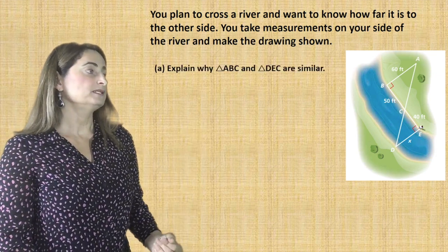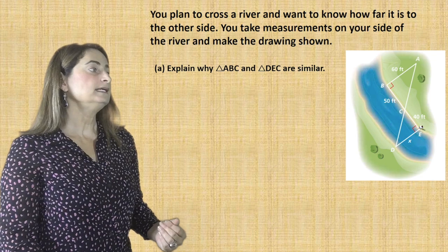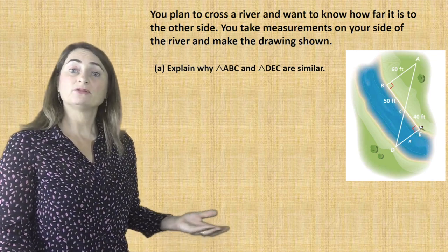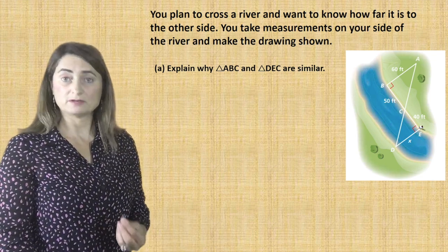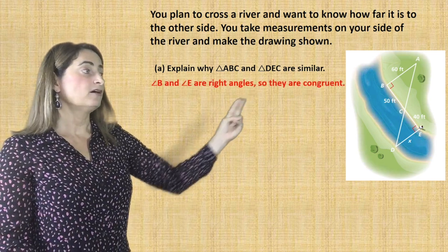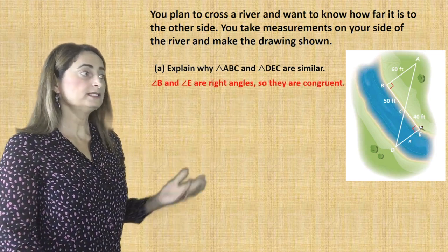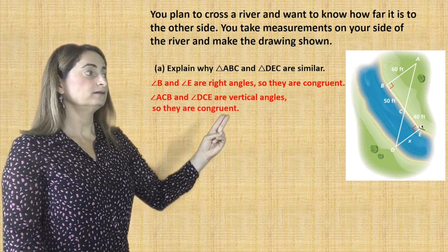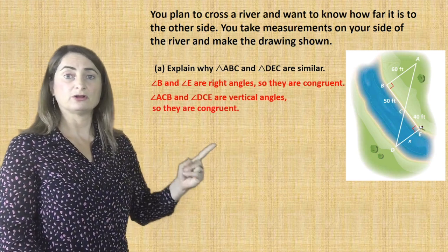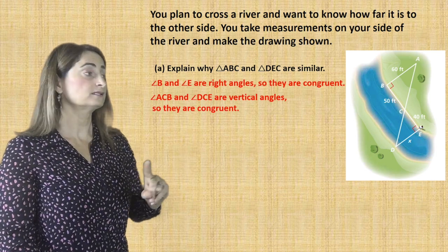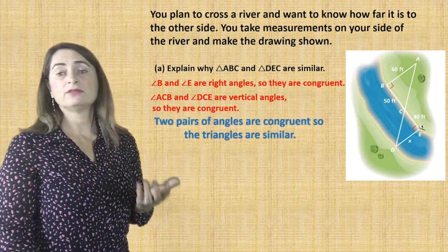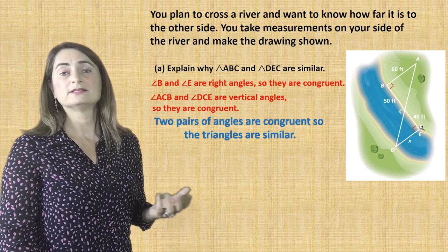Explain why triangle ABC and triangle DEC are similar. We'll use angle relationships to prove the two triangles are similar. Angle B and angle E are right angles, so they are congruent. Angle ACB and angle DCE are vertical angles — they are on the opposite side of the vertex. So two pairs of angles are congruent, therefore the two triangles are similar.